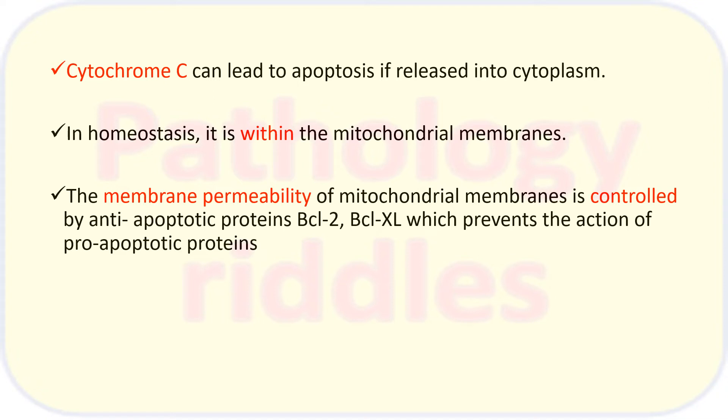The most important element in apoptosis is cytochrome C. Cytochrome C is usually found between the mitochondrial membranes and is not normally found in the cytoplasm. The membrane permeability of the mitochondrial membranes — where cytochrome C resides — is controlled by anti-apoptotic proteins like BCL-2 and BCL-XL, which prevent the action of pro-apoptotic proteins.